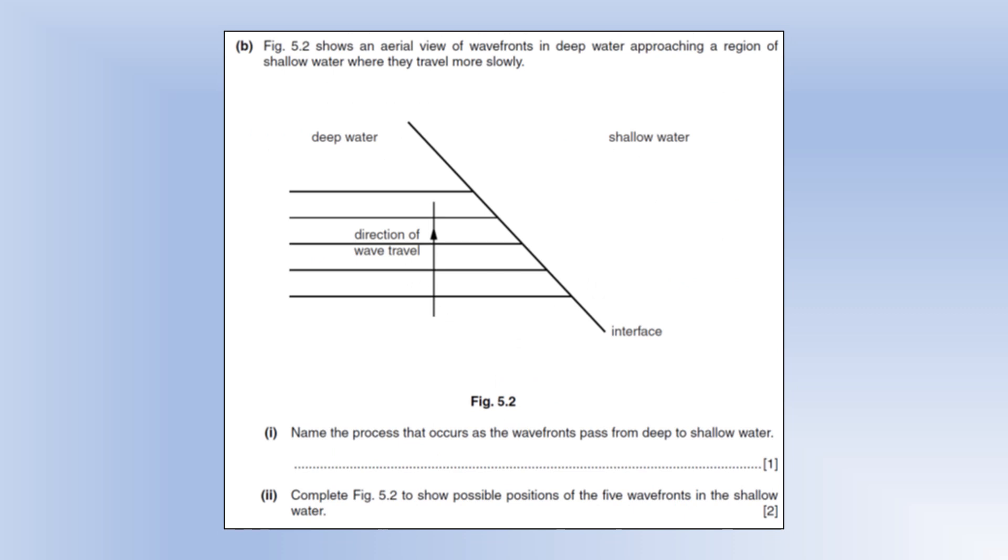So the diagram shows an aerial view of wavefronts in deep water approaching a region of shallow water where they travel more slowly. Name the process that occurs when you go from deep to shallow water - well you're going to get refraction because you get a change in speed.